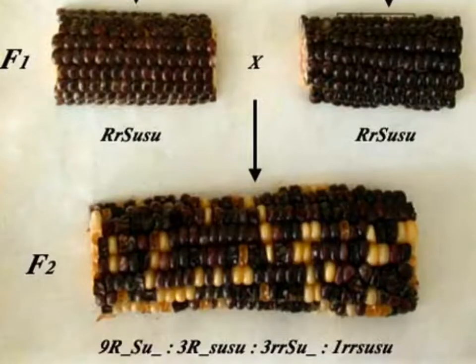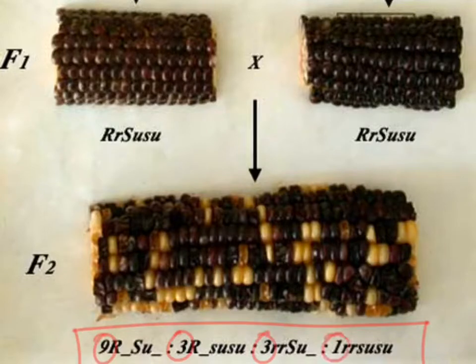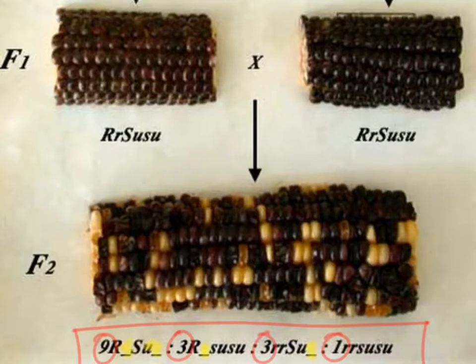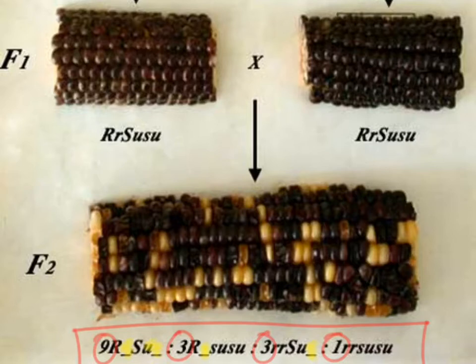Looking back at the picture from the beginning, you can see the nine to three to three to one ratio. Instead of writing out 'purple and starchy' or 'purple and sugary,' they kind of wrote the genotypes with blanks — that represents all the ones with at least one dominant R and at least one dominant SU. It's easier than writing out 'purple' or 'sugary,' but of course you'll see questions written in all kinds of ways by people trained in genetics at different time periods under different norms. So I'm trying to expose you to a little bit of everything.